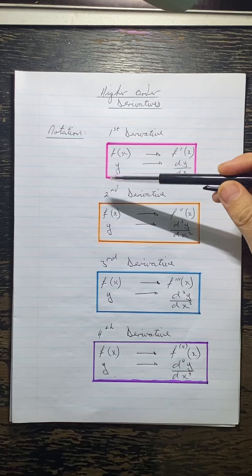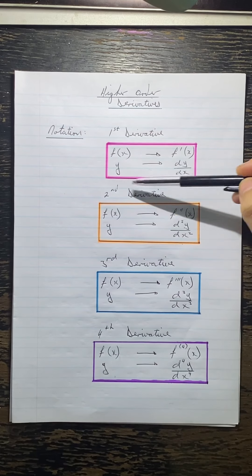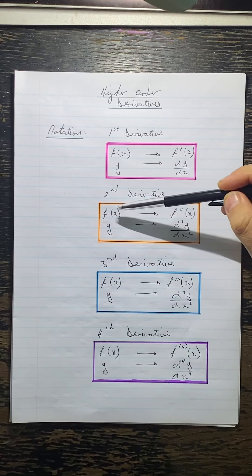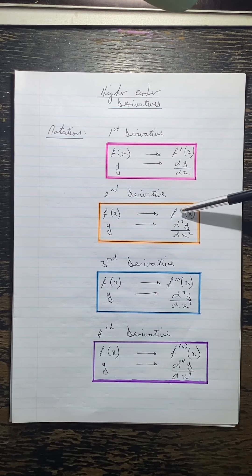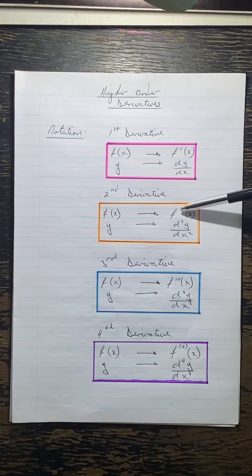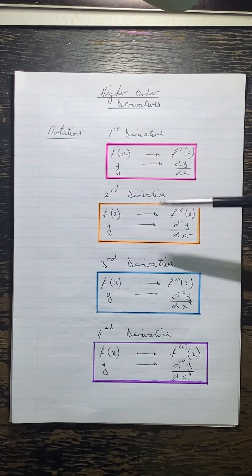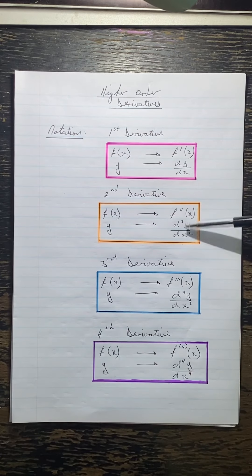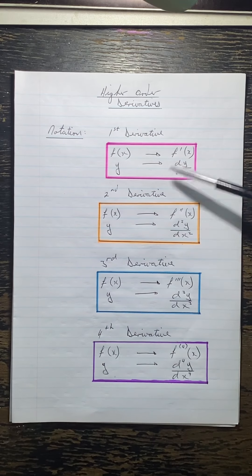Now we're going on to the higher order stuff. For the second derivative, if it's given in the f form, we say f double dashed to denote the second derivative. If it's given in y, we say d squared y by dx squared — that shows the second derivative.